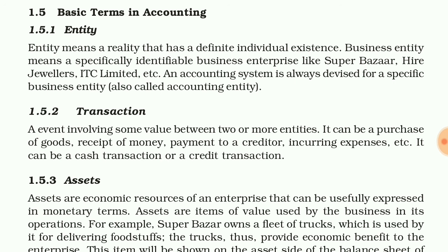The next basic term is transaction. A transaction is an event involving some value between two or more entities. Examples of transactions include purchasing goods, receiving money, giving money, or any financial exchange. These can be cash transactions or credit transactions — meaning you may buy goods in cash or on credit.